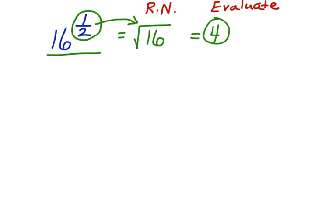Here's another one. Let's say I have 8 to the 1 third power. 8 to the 1 third can be rewritten using radical notation as the cubed root of 8. Now if I want to evaluate this, I'm looking for a number that when multiplied by itself 3 times will give me 8. I can evaluate the cubed root of 8 as being 2.